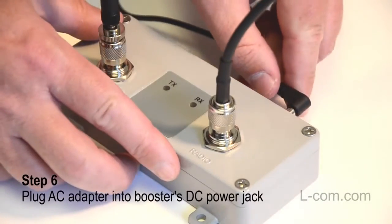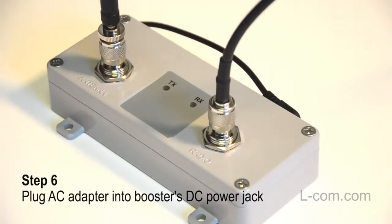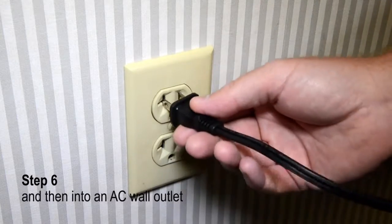Finally, plug the AC adapter into the Wi-Fi booster's DC power jack and then into an AC wall outlet.